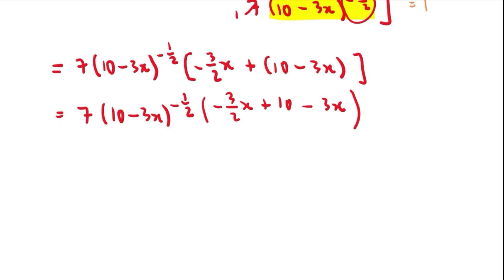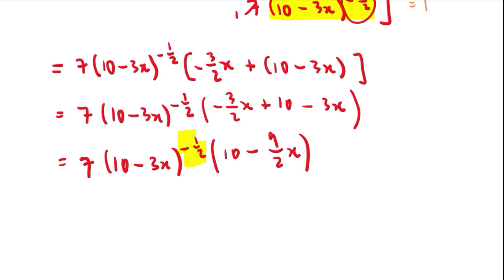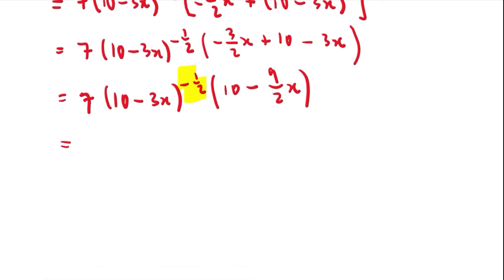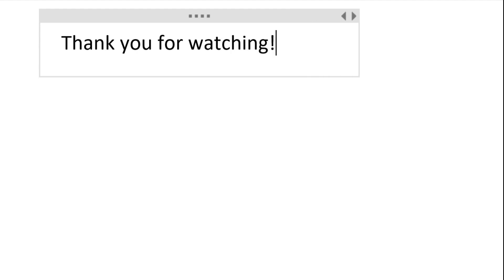Simplifying inside the bracket: negative 3 over 2 x plus 10 minus 3x becomes 10 minus 9 over 2 times x. Since we have a negative power outside, it is better to write it as a positive power in the denominator. The final answer is 7(10 minus 9 over 2 times x) divided by (10 minus 3x) to the power of one half, applying the law of indices that a to the negative 1 equals 1 over a. Thank you for watching — please leave a like and subscribe.